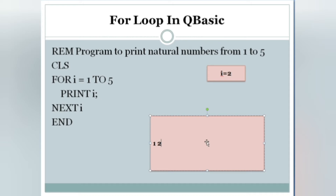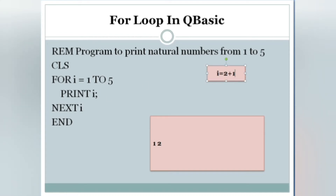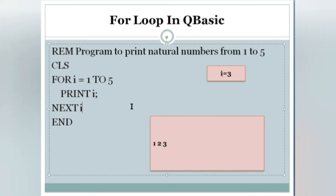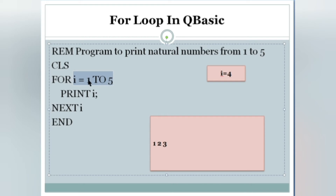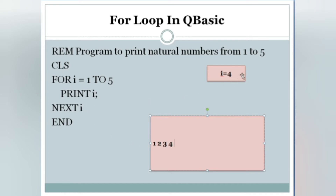It prints the value of i, which is two. A semicolon is used so it prints on the same line with some space. Then NEXT i makes i = 2 + 1 = 3. Back at the FOR loop, three is in range, condition true, print i — three is printed. Then NEXT i gives i = 4, which is also in range, so four is printed.